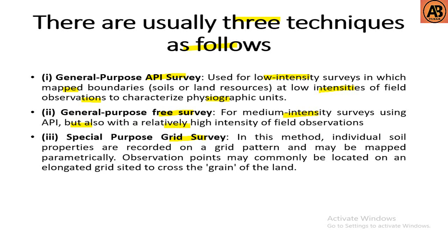Free survey is used for medium-intensity surveys, using API but also with a relatively high intensity of field observations. Grid survey is a special purpose method in which individual soil properties are recorded on a grid pattern and may be mapped parametrically. Observation points are commonly located on an elongated grid sited across the grain of the land.